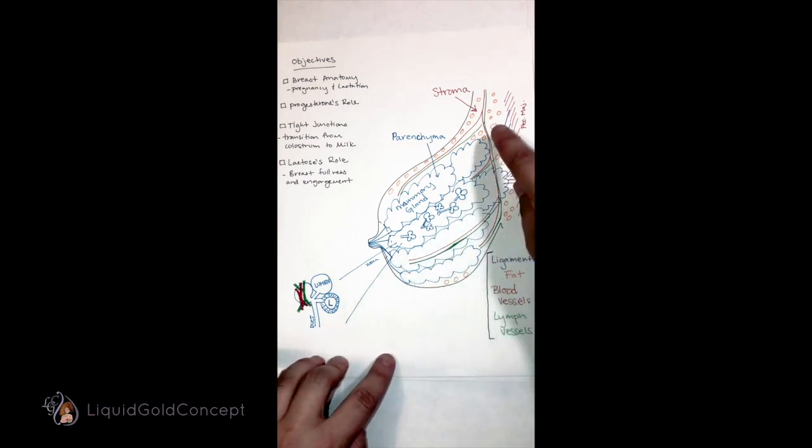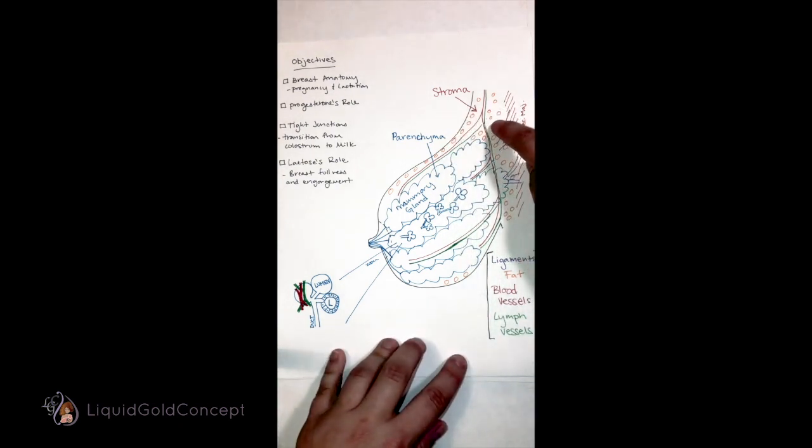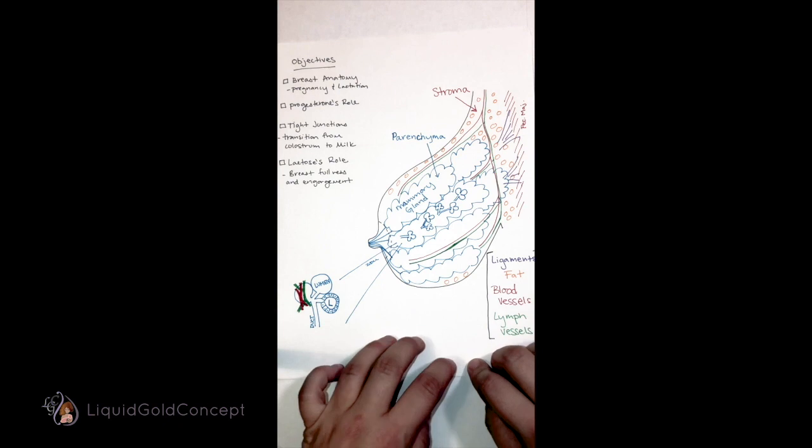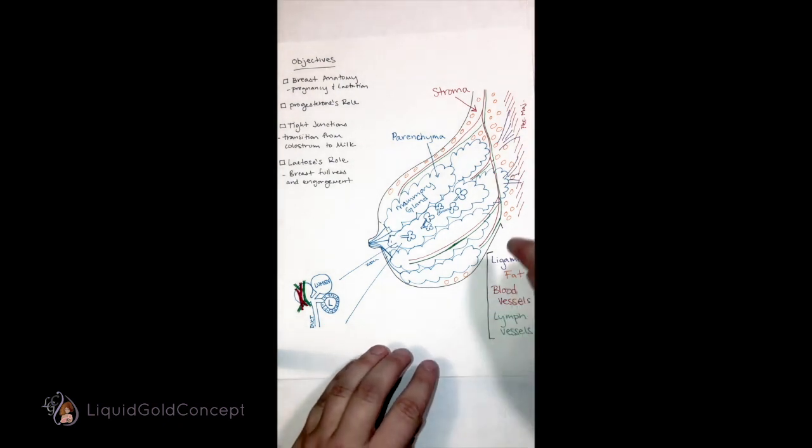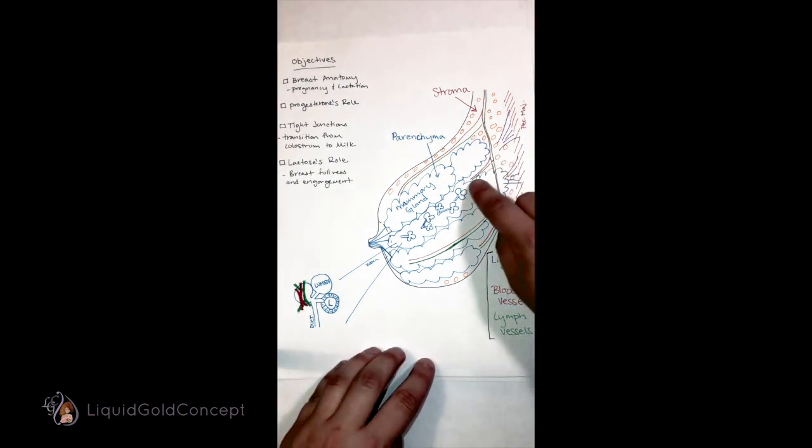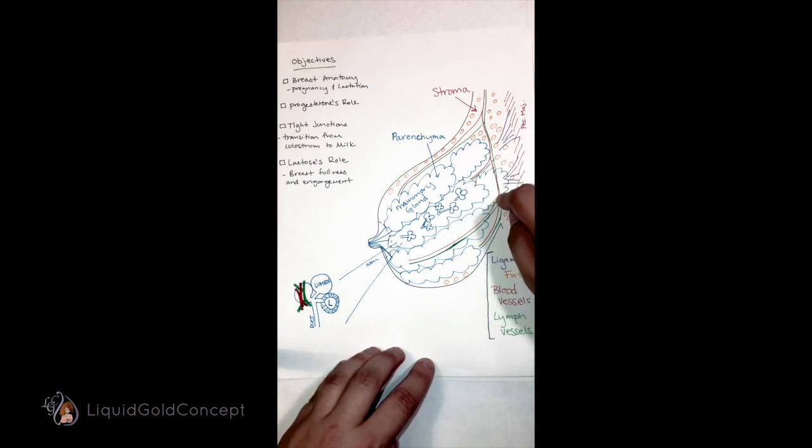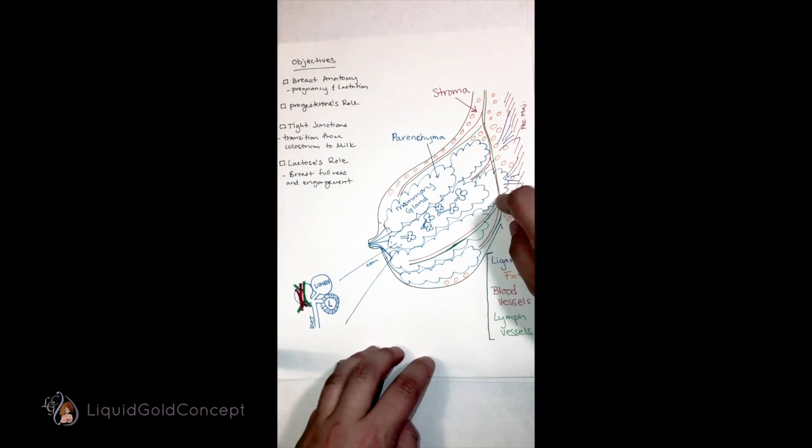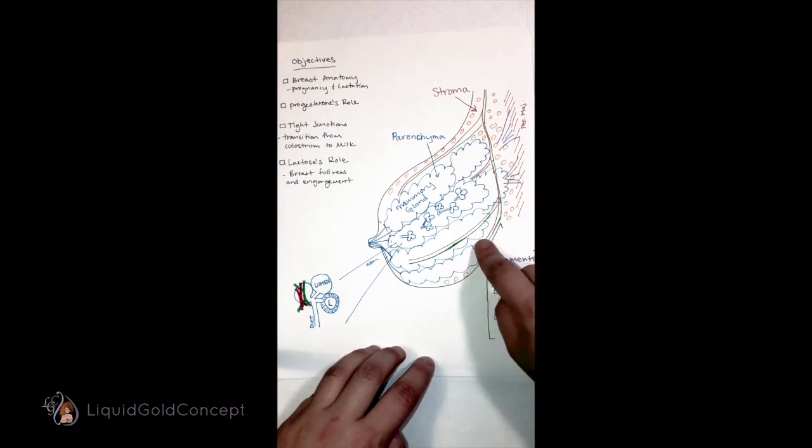The stroma, in contrast, is all of the other supportive tissue like fats, blood and lymph vessels, ligaments, as well as interstitial fluids. The blood is responsible for bringing nutrients and taking away some of the waste and the lymph vessels, represented in green, are responsible for recycling fluid in the breast tissue.